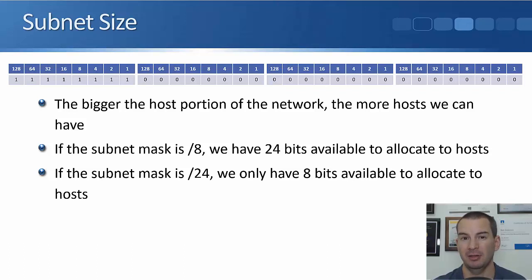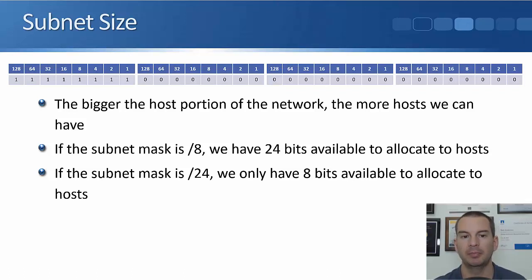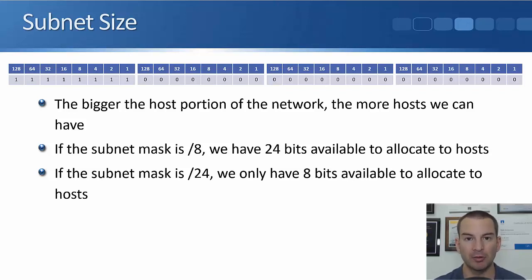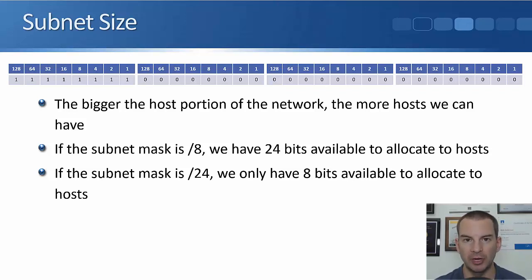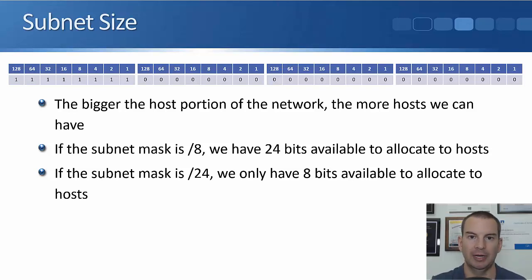If a subnet mask is a slash 8, for example, using the first eight bits for the network portion of the address, then eight bits for the network portion and 24 bits for the host portion. If we compare that with a slash 24, we're going to have 24 bits for the network portion and only eight bits for the host portion. So a slash 8 is going to have not many networks but a lot of hosts per network, or a slash 24 we'd have a lot of networks but not many hosts per network. So we've got a trade-off whenever we decide where that line is going to be about how many networks we're going to have and how many hosts.